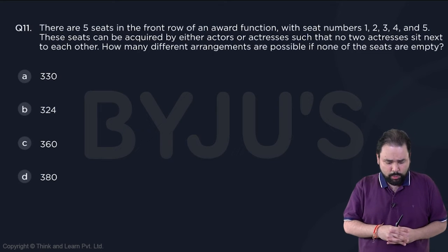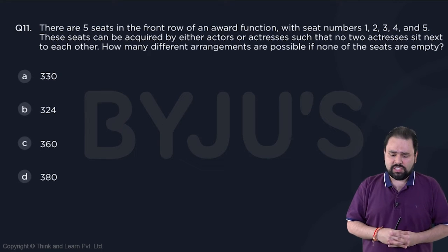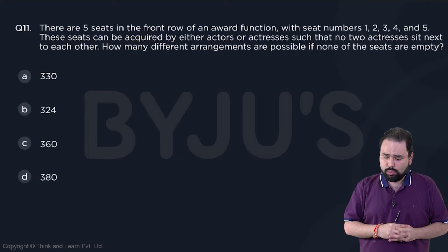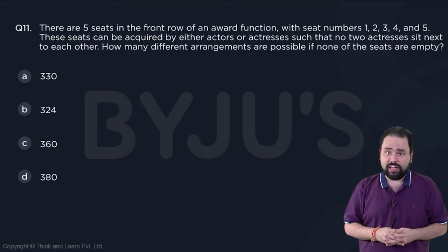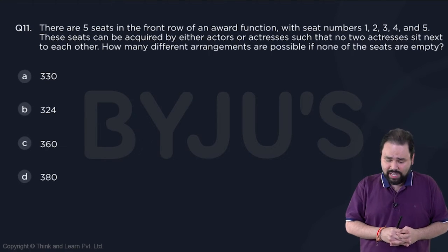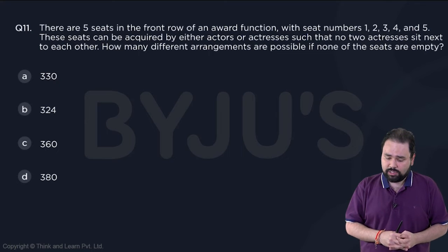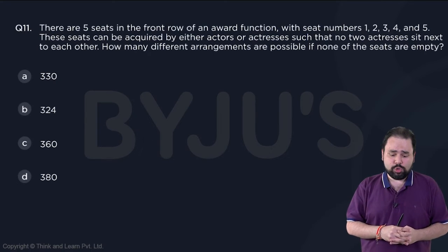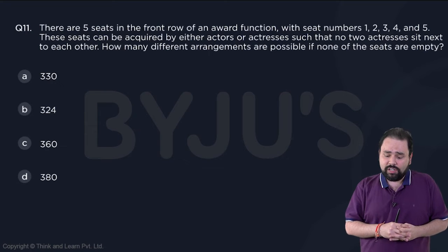Let's have a look at the next one. There are five seats in the front row of an award function with seat numbers 1, 2, 3, 4, and 5. These seats can be acquired by either actors or actresses such that no two actresses sit next to each other. How many different arrangements are possible?